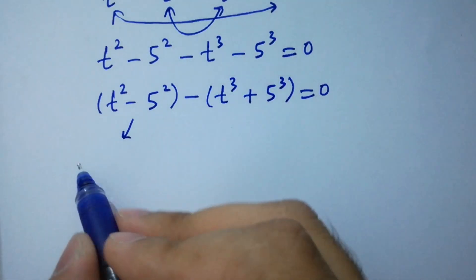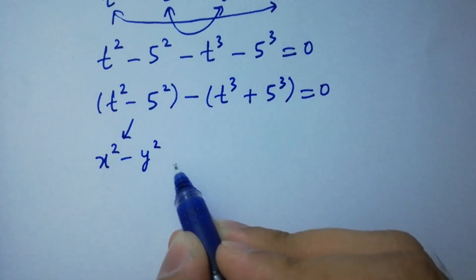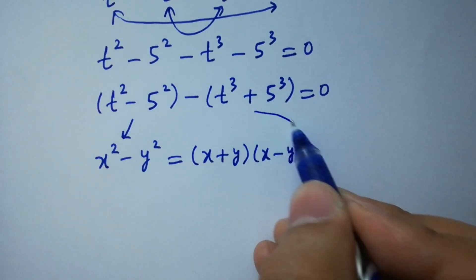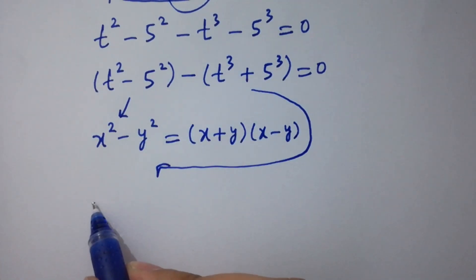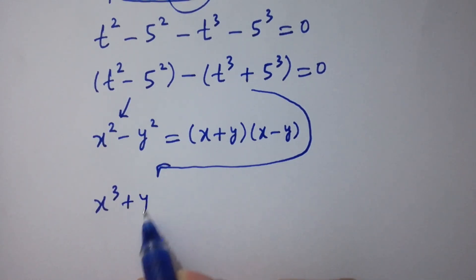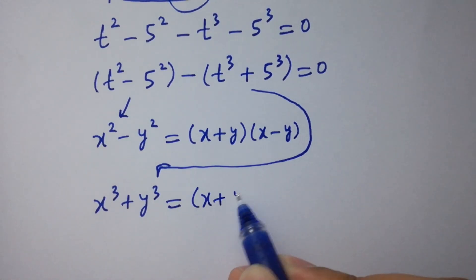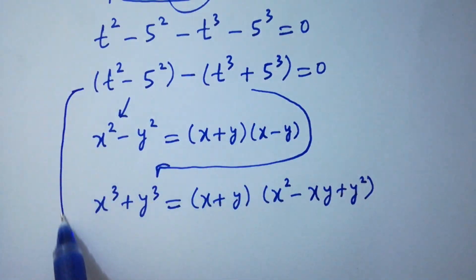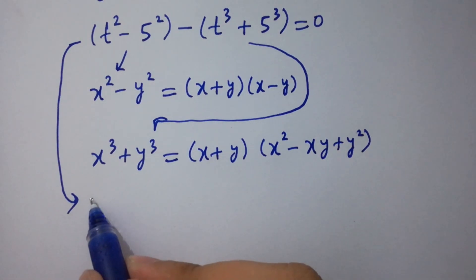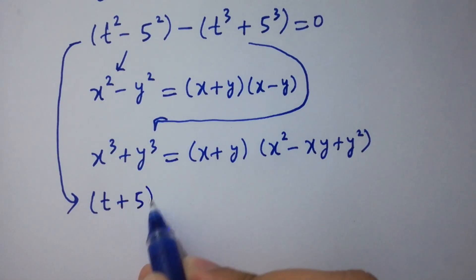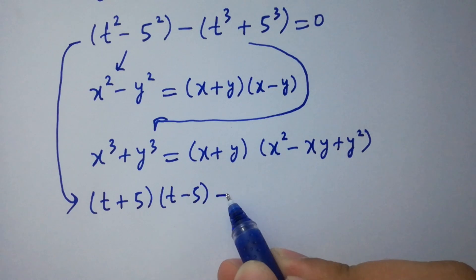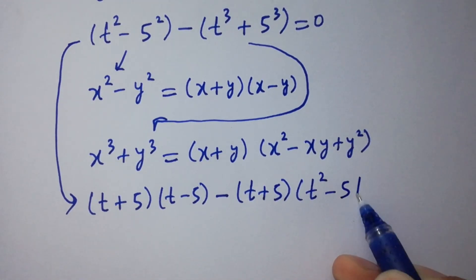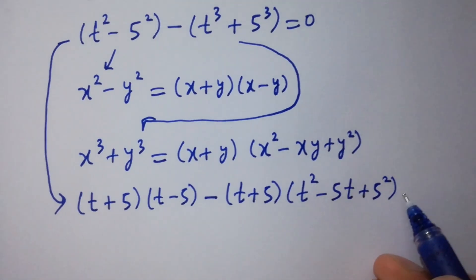We know the formula x squared minus y squared equals (x plus y)(x minus y), and the formula x cubed plus y cubed equals (x plus y)(x squared minus xy plus y squared). Applying these: t squared minus 5 squared becomes (t plus 5)(t minus 5), and t cubed plus 5 cubed expands accordingly, giving us (t plus 5)(t minus 5) minus (t plus 5)(t squared minus 5t plus 25) equals 0.